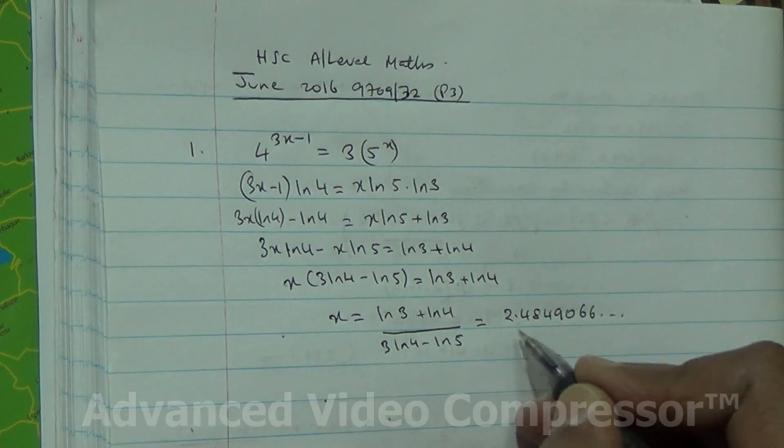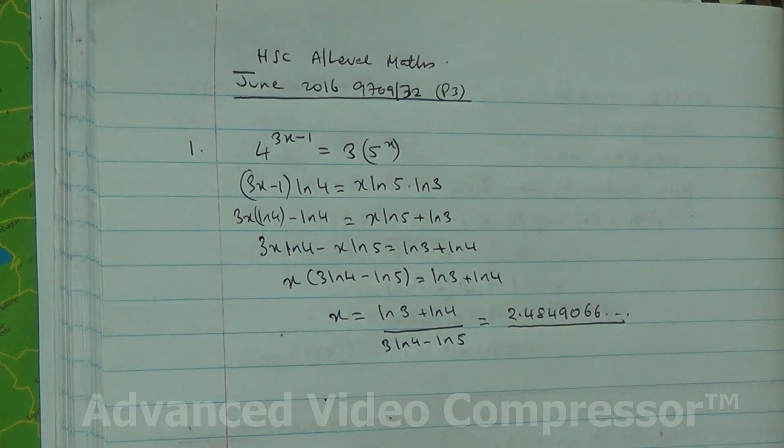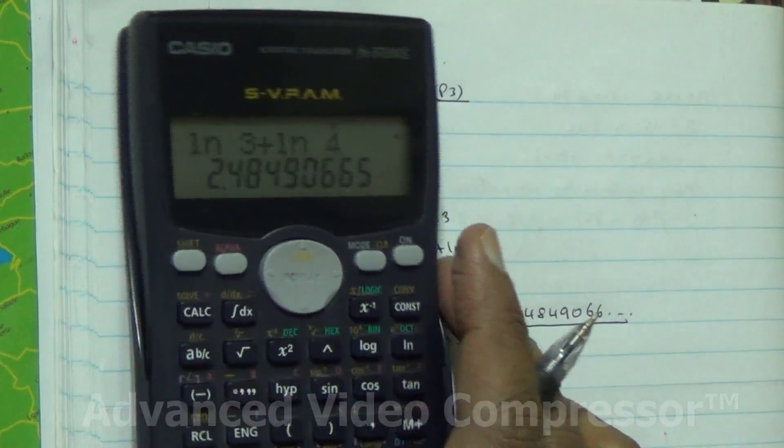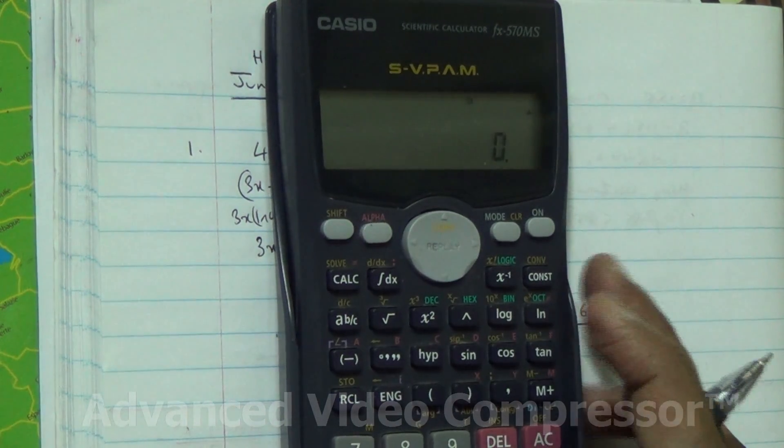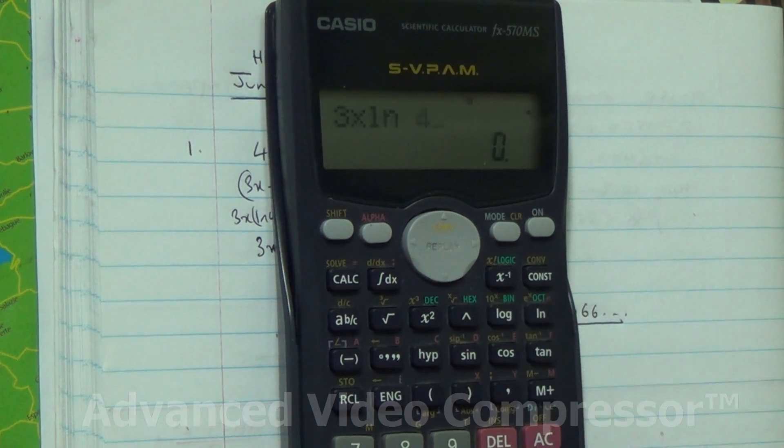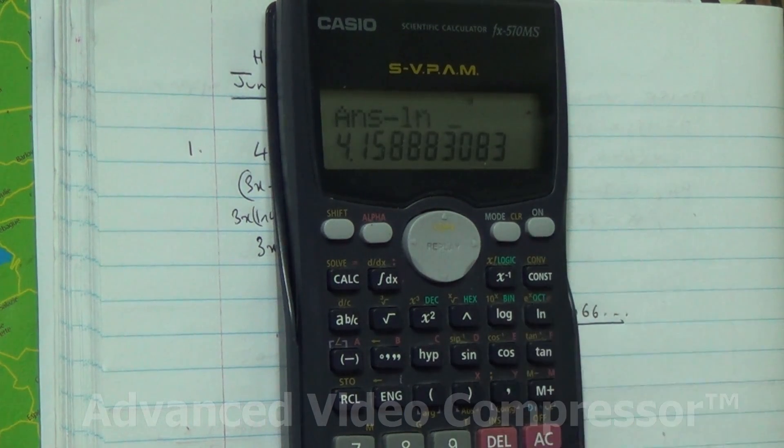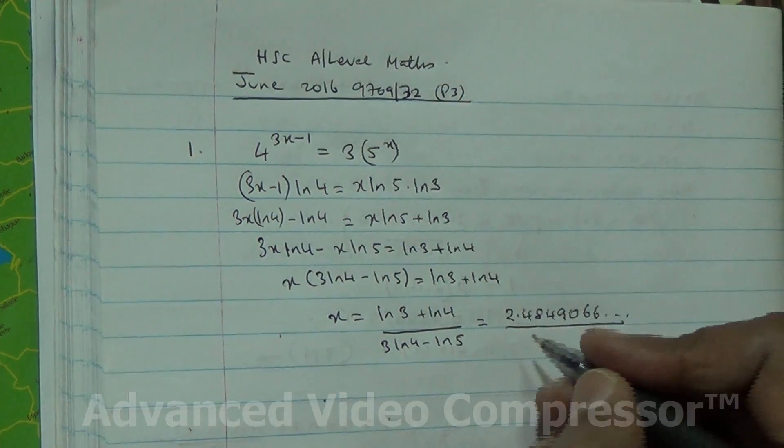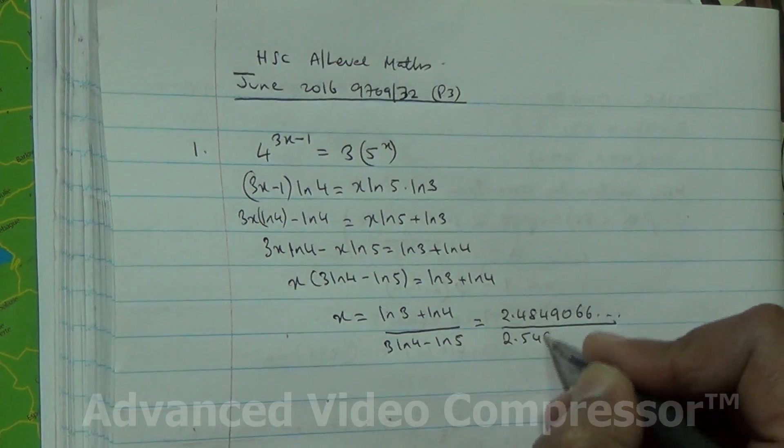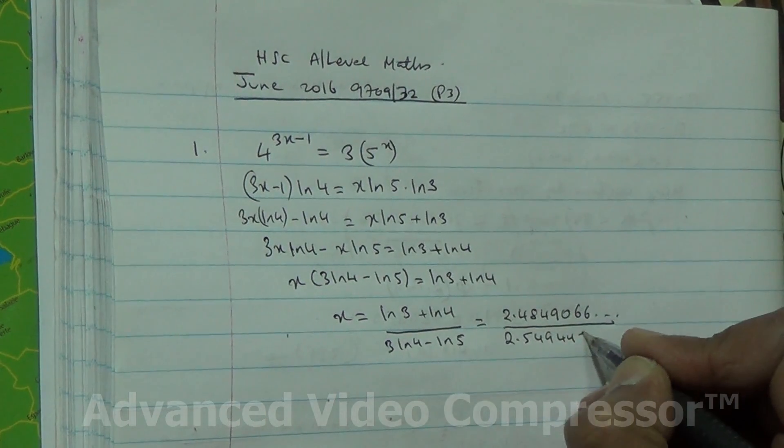So 2.4849. Now 3 times ln 4 minus ln 5, it's going to give us 2.549.